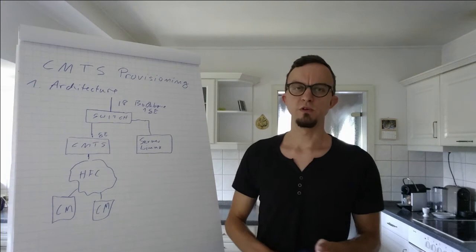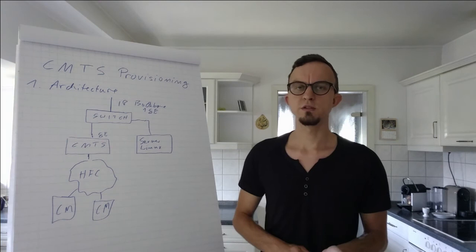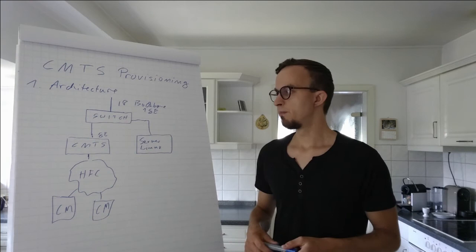Maybe one general word first: what we do is connect the CMTS via a serial cable. I have made a video about it which I will also link in the description. Then we just provide some kind of default config for the cable modem termination system and tell it how it should work.